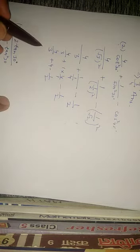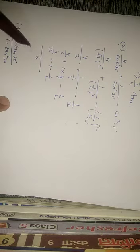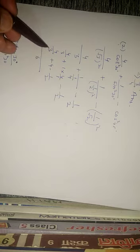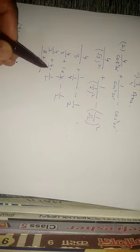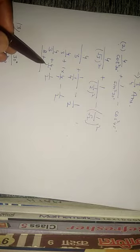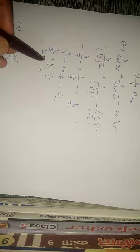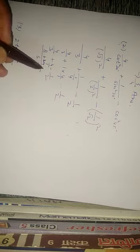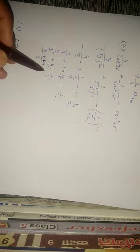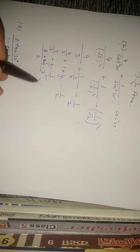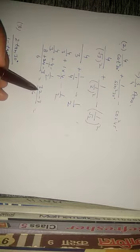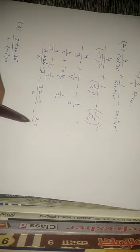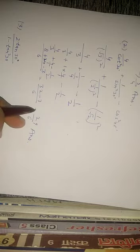LCM लेंगे — LCM आएगा 6 से। 6 को 3 से divide करेंगे तो 2 time, और 2 को 4 से multiply करेंगे तो 8 आएगा। 6 को 1 से divide करेंगे तो 6, और 6 को 4 से multiply करेंगे तो 24 आएगा। 6 को 2 से divide करेंगे तो 3, और 3 को 1 से multiply करेंगे तो 3। तो आएगा: 8 plus 24 minus 3 upon 6, यानी 29 upon 6। Answer sheet में इस question का answer wrong दिया हुआ है, वो आपको correct करना है।